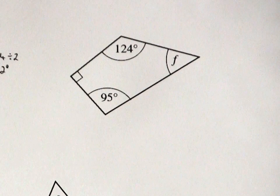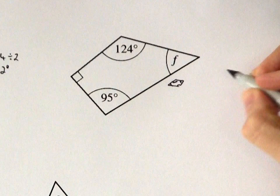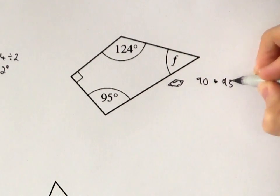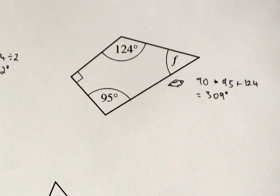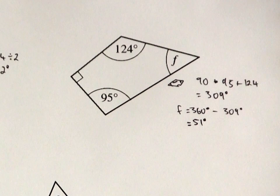Here's a quadrilateral. What do we know about the angles in a quadrilateral? They add up to 360 degrees. Well, 90 plus 95 plus 124 is 309. Take that away from 360, and F must be 51 degrees.